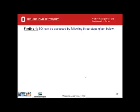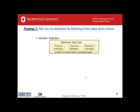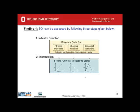Finding one: soil quality index can be assessed by following three steps. Those steps are indicator selection — physical parameters, chemical parameters, biological parameters, as presented in the previous slide. These indicators are chosen based on specific management goals and are then interpreted by scoring functions; the function can be increasing, decreasing, or having an optimum — three particular scenarios. On the basis of these, we develop an integrated procedure to arrive at a soil quality index.